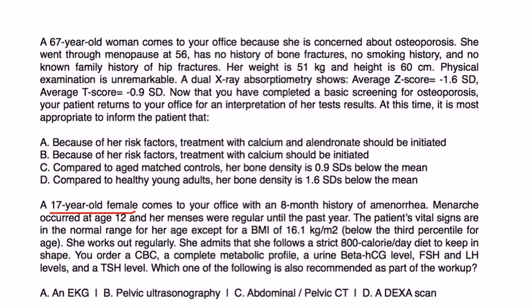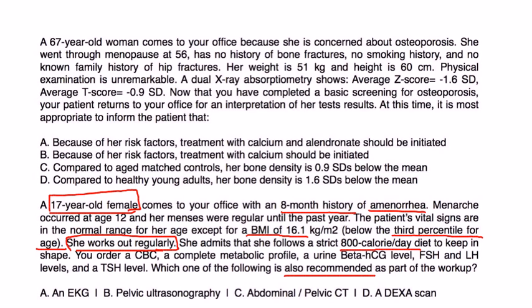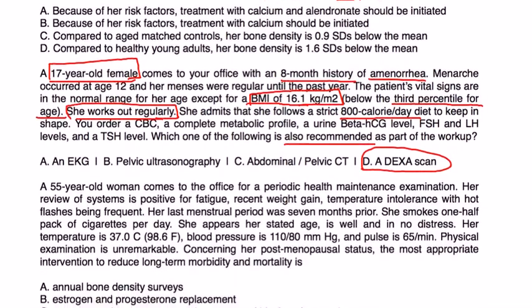A 17-year-old female comes to the office with an 8-month history of amenorrhea. Menarche occurred at age 12 and menses were regular until the past year. Vital signs are normal except for a BMI of 16, below the third percentile for her age. She works out regularly and follows a strict 800-calorie-per-day diet. She is likely an athlete, and her low BMI is a risk factor for osteoporosis even at age 17. A DEXA scan should be ordered.